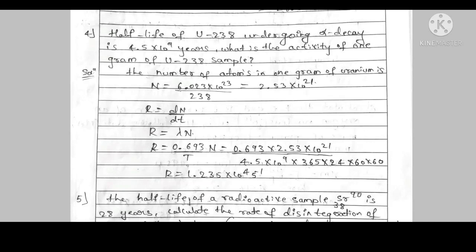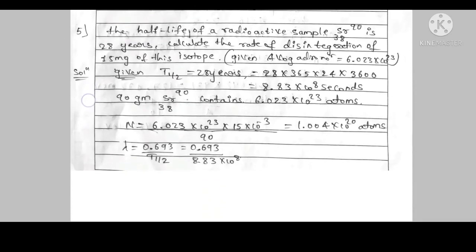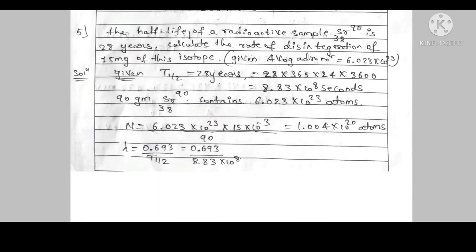Half-life of uranium-238 undergoing alpha decay is 4.5 × 10^9 years. This is the calculation, mostly decay constant calculation. This is the fifth question.